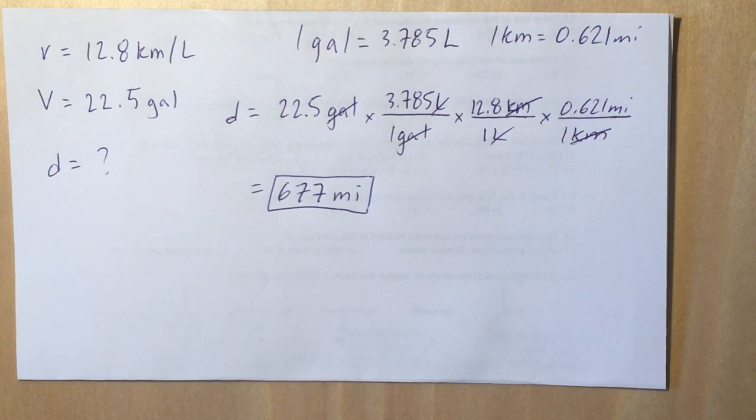And then now that we have liters, we can use that fuel economy to cancel out the liters, giving us a distance in kilometers, but we don't want it in kilometers, we want it in miles. So we'll use our other conversion factor to go from kilometers to miles, canceling out kilometers.